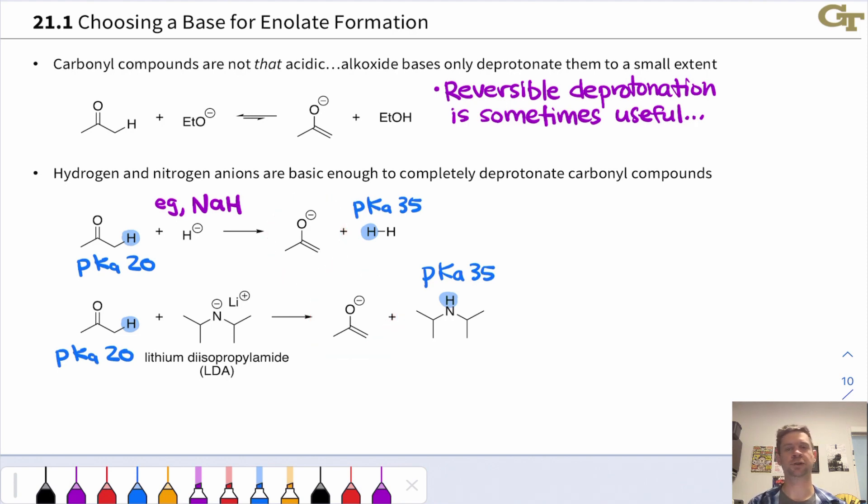The carbonyl compound is entirely and completely converted to enolate like this. So this is a great way to generate the enolate quantitatively if we need to avoid issues with only a small amount of the enolate being generated in the first case, which is actually quite common as we'll see.